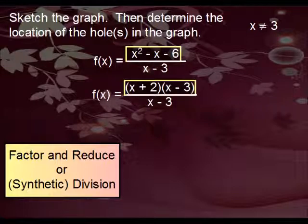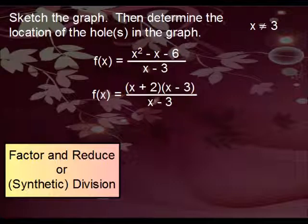That's what the numerator factors out to, x plus two times x minus three. And now we can reduce. Hopefully you see that x minus three reduces out top and bottom.